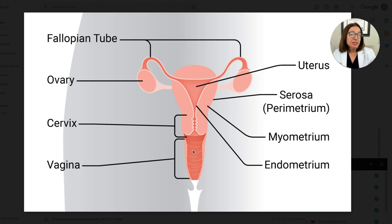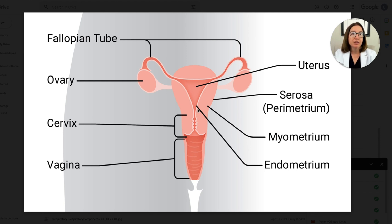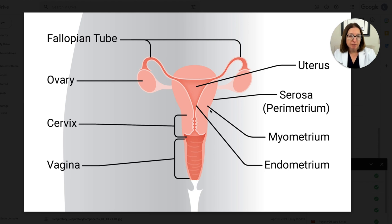The uterus has three layers. The innermost layer is the endometrium, and we will be talking about a disorder that affects this layer in another video in this playlist. The middle layer is the myometrium, which is composed of smooth muscle. The outermost layer is the serosa. Below the uterus, we have the vagina, which is a hollow, flexible tube that connects the uterine cervix to the vulva.